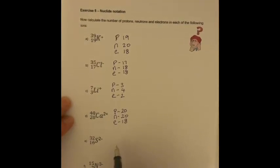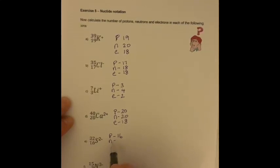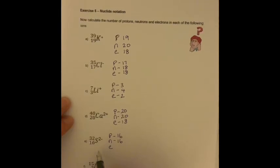Sulfur. We can see the number of protons — it's going to be at the bottom there — that's going to be 16. We can see the number of neutrons: 32 minus 16 is going to be 16. And the number of electrons — we can see there that we have two extra negative charges, therefore we have two extra electrons relative to protons, so we must have 18 electrons.